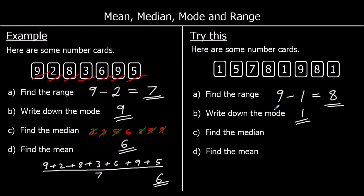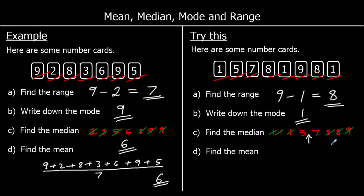The median is the middle number, so let's put them in order first. We've got 3 ones. We haven't got a 2, a 3 or a 4. We've got a 5, a 7, an 8, and a 9. So we cross off from both sides, and if we cross off 3 from both sides, we're left with two numbers in the middle. Halfway between 5 and 7 is 6, so 6 is the median.